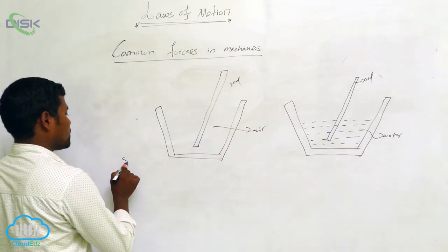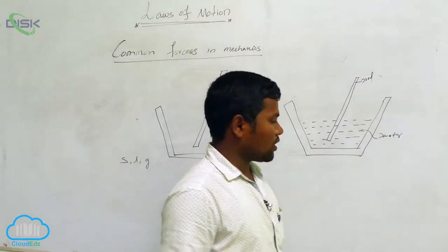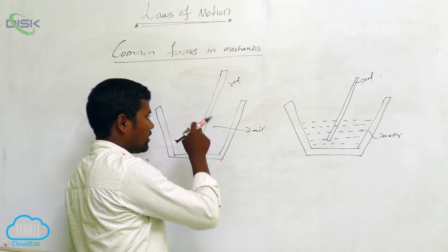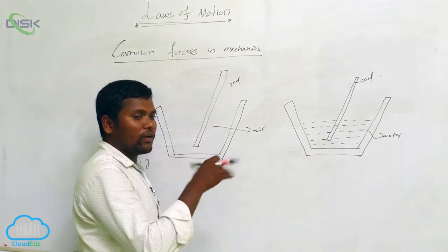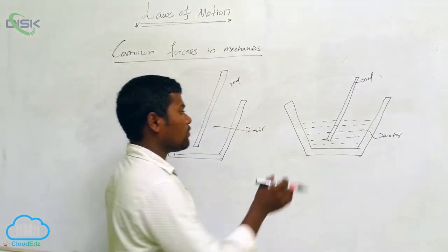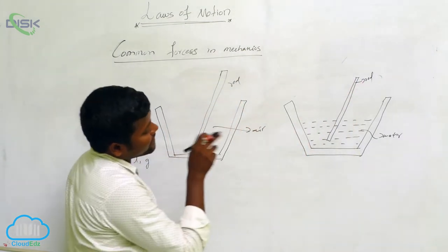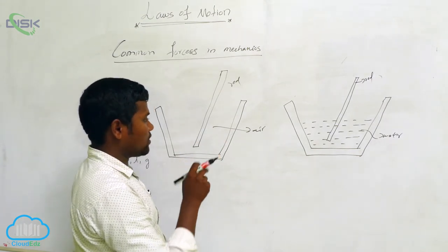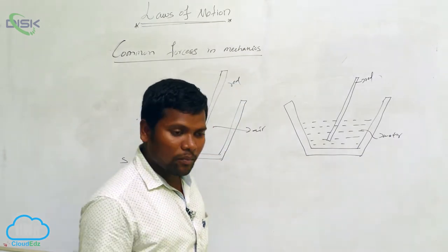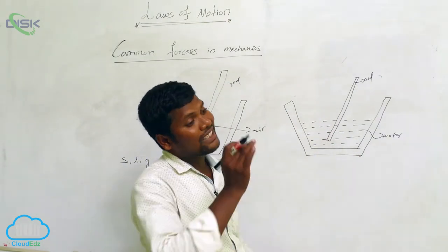We have three states: solid, liquid, and gas. In gas, particle distance is very large; in water, particle distance is much smaller compared to air. So in air the rod moves very fast, but in water the density is more compared to air, so the rod won't move fast. Something is opposing your force — that is what we call frictional force.